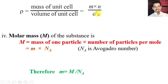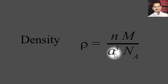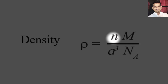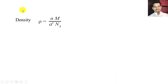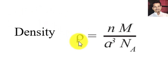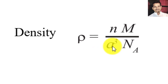We know that density = mass of 1 particle × n divided by a³. Since mass of 1 atom equals molar mass (M) divided by Avogadro's number (N_A), substituting this we get: density = n × M divided by a³ × N_A. So if we know the number of atoms in the unit cell, the molar mass, and the edge length, we can find out the density of the substance. This expression gives the relationship between the density of the substance, molar mass, and edge length of the unit cell.